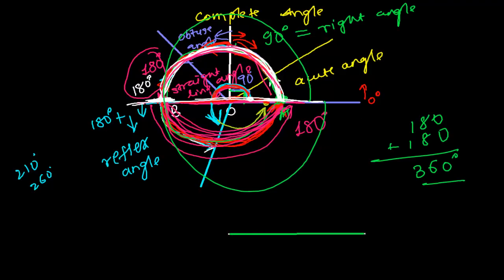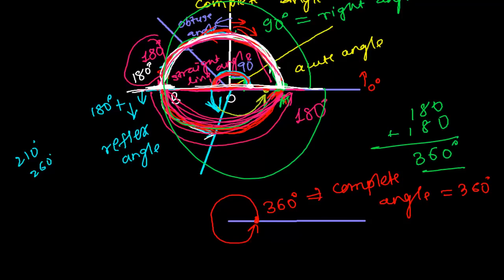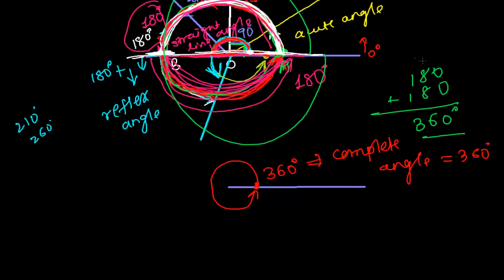I started motion from here and came back to the same original position, covering 360 degrees. This is called the complete angle. The angle which is equal to 360 degrees is known as the complete angle.